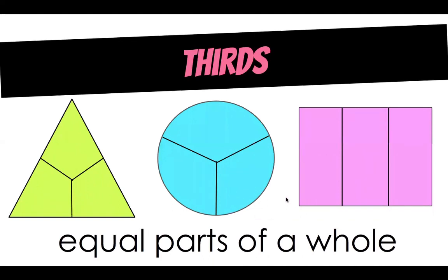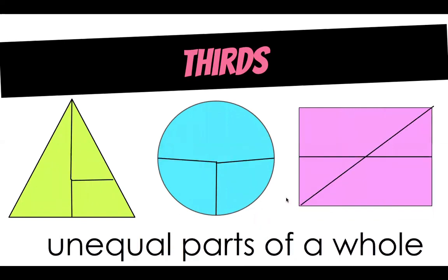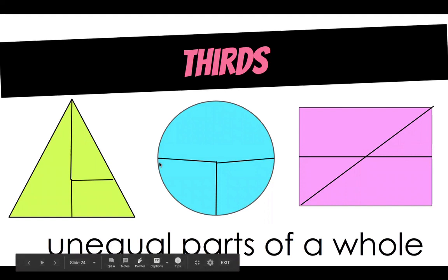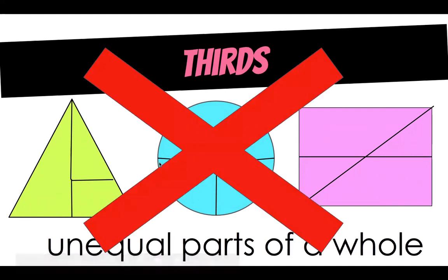Equal parts of a whole are fractions, and these are equal thirds. These, however, are not thirds that are equal parts of the whole. If I was splitting a pizza with three friends and somebody got this piece and I got this one and somebody else got that one, this person would have a lot more — that would be unequal. These are not thirds.